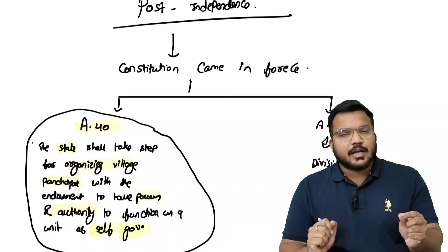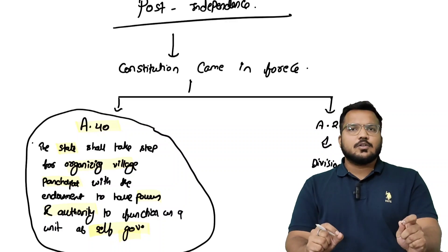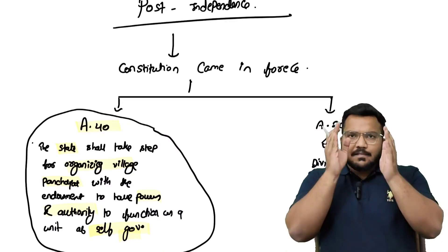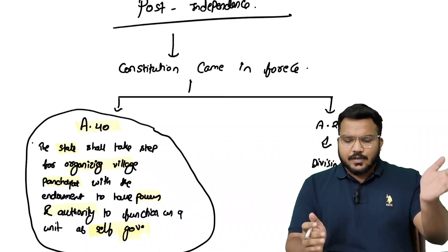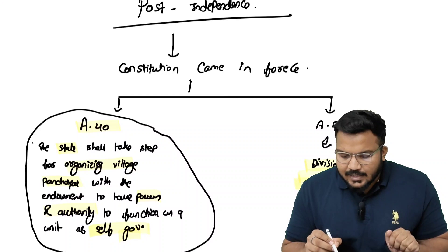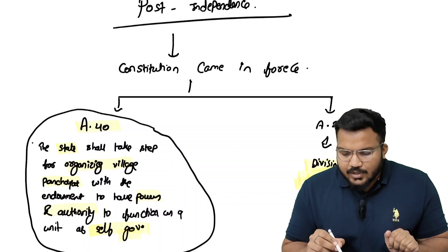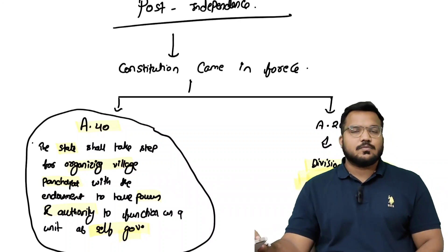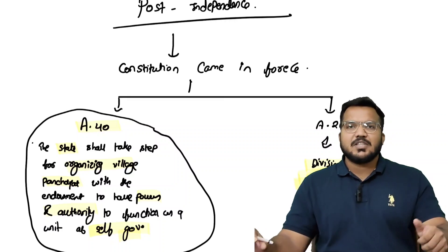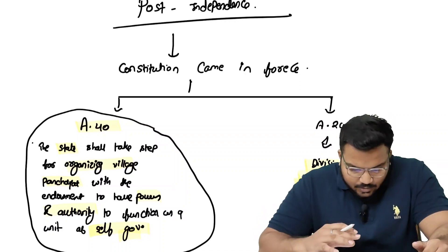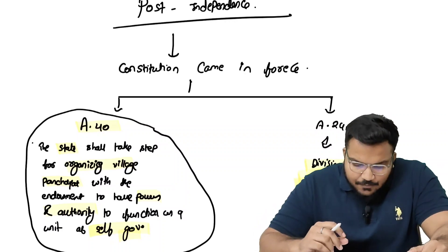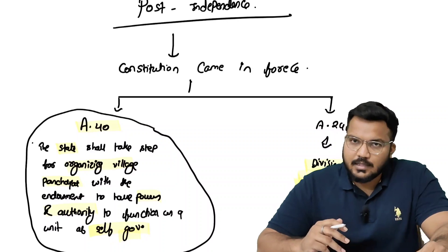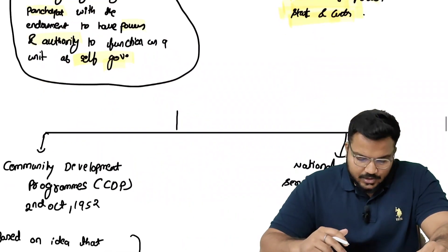Article 246 constitution को power देता है different lists बनाने का — division of power between center and state. तो Article 40 और Article 246 दोनों Panchayati Raj institutions के respect में important हैं।